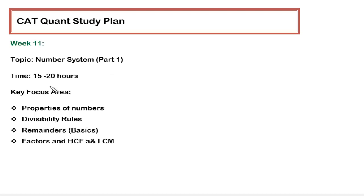In part one, the timing is the same and the key focus areas are: you have to focus on properties of numbers. Within properties of numbers you have to focus primarily on prime numbers and perfect squares.